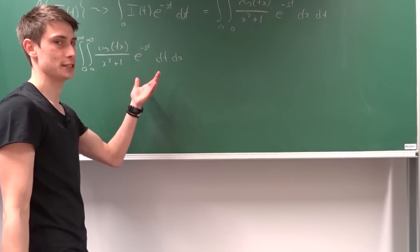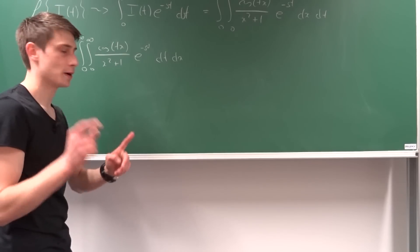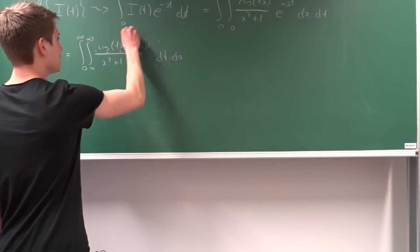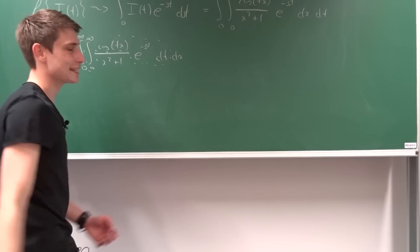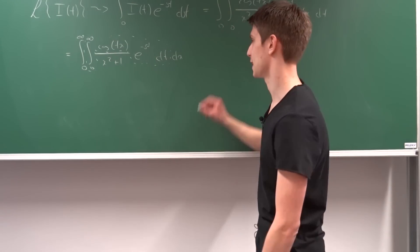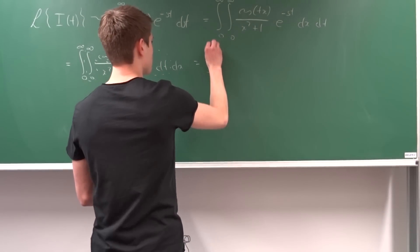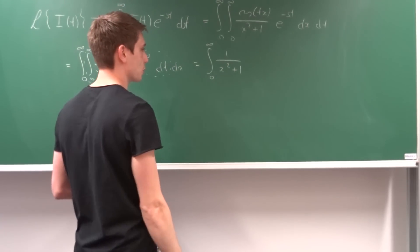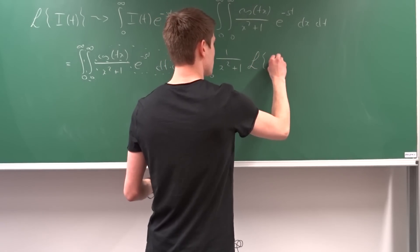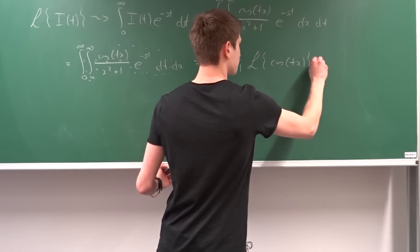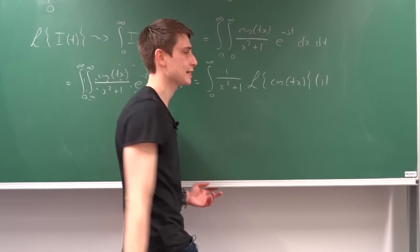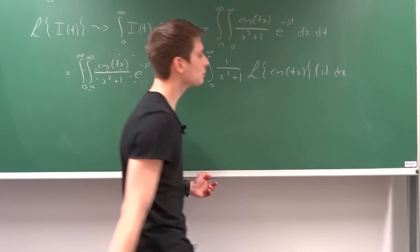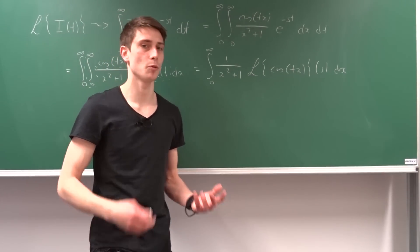What can we do after interchanging the integral signs? Well, you might notice that the inner integral over t — cosine of t times x times e to the minus st — is just the Laplace transform of cosine of t times x. So we now have the integral from 0 to infinity of 1 over x squared plus 1, leaving that as a constant in terms of the Laplace transform, times the Laplace transform of cosine of tx, in terms of s, dx.